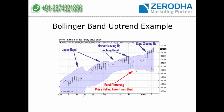Now there is a Bollinger Band uptrend example. In an uptrend, the price moves up touching the upper band, and the upper band is also sloping upward. When the trend dies down, the band flattens and the price pulls away from the upper band. Let us see a real-life example.